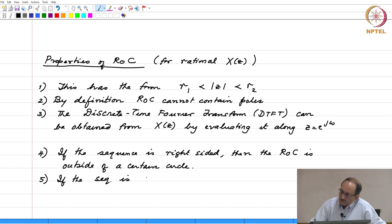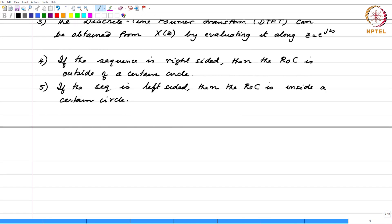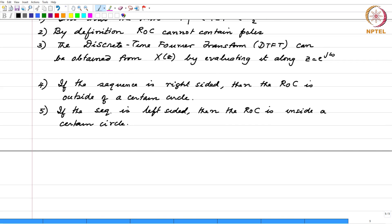If the sequence is left sided, then the ROC is inside a certain circle. So if the function is left sided, the bilateral line is left of a certain vertical line. What that line is depends upon the function.